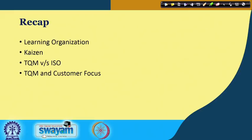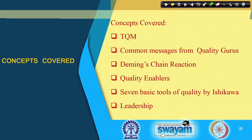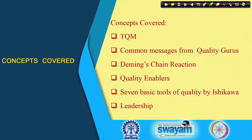This lecture will take you further and help you appreciate the various philosophies advocated by quality gurus on total quality management. We will focus on fundamentals of TQM, common messages from quality gurus, Deming's chain reaction, quality enablers, seven basic tools of quality by Ishikawa, and leadership issues. This will help you create a solid foundation for implementing Six Sigma and realizing the excellent benefits in terms of money value.